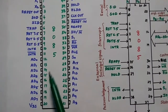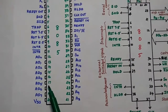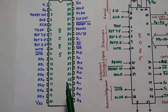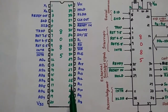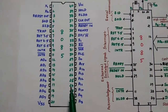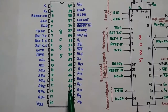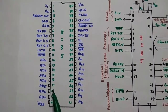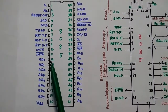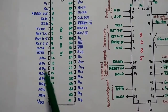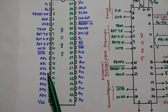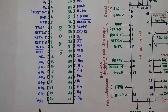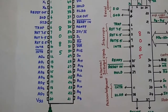The next 8 pins, pins 12 to 19, are used for the multiplexed address and data lines. As we know, the 8085 is an 8-bit processor with 8 data lines and 16 address lines. In order to reduce the number of pins in the IC, the data lines are multiplexed along with the lower byte of address lines — AD0 to AD7 — from pin 12 to pin 19. The 20th pin is VSS, the ground signal.